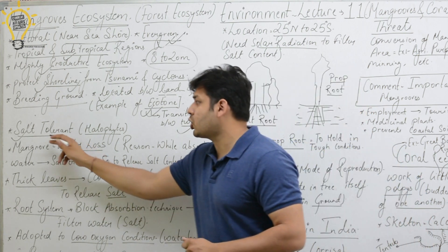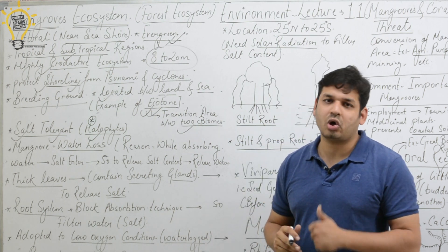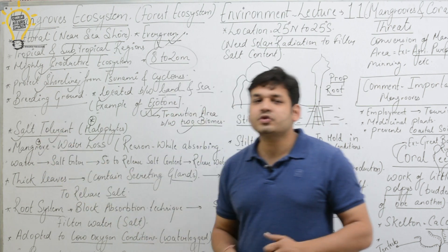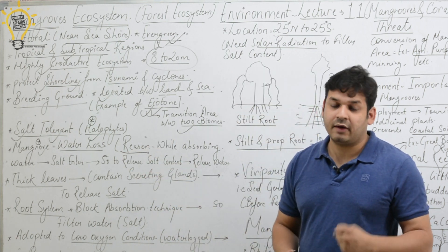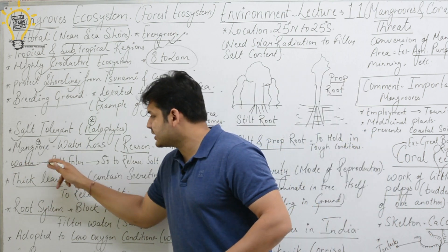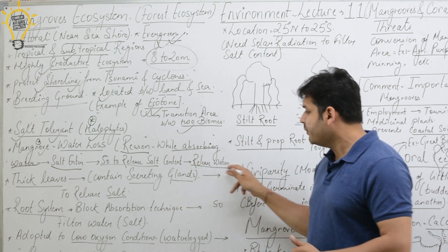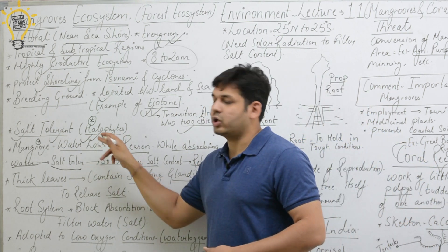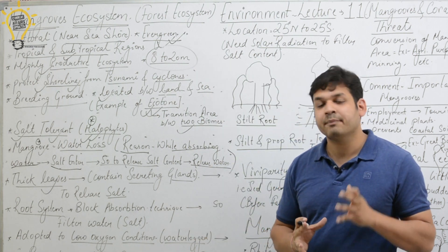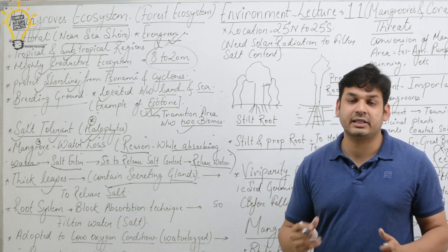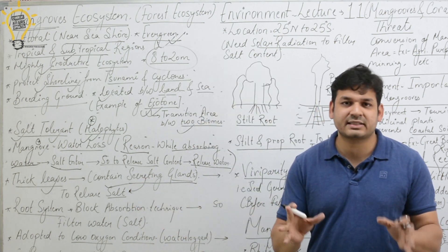Mangrove trees are salt tolerant and are known as halophytes. Because they absorb water from coastal areas, salt enters along with the water, so they need to release that salt content. This is why mangroves lose water. Their thick leaves contain secreting glands which play a role in releasing the salt content.